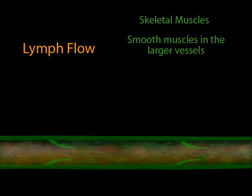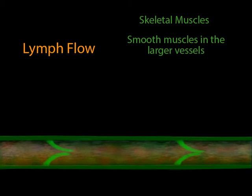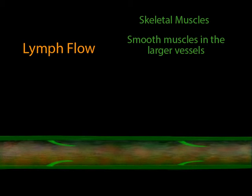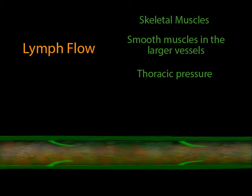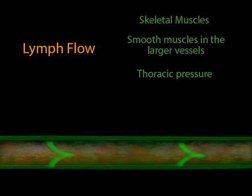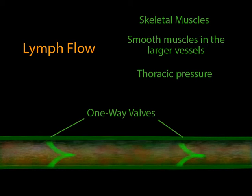There are smooth muscles at the larger lymph vessels. The contraction of these smooth muscles adds to the force provided by the skeletal muscles. Also, when we breathe, pressure changes occur in the thoracic region. When the thoracic pressure drops, that tends to pull lymph into the thoracic duct. One-way valves prevent the lymph from flowing backwards.